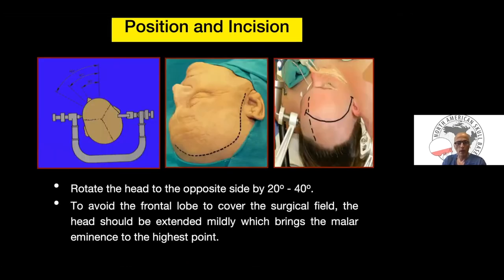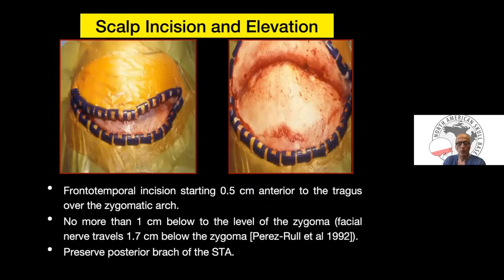For position and skin incision: I like to rotate the head to the opposite side 20 to 40 degrees, depending on the location of the lesion. To avoid the frontal lobe covering the surgical field, you need to bring the malar eminence to the highest point in your surgical field, requiring slight extension of the head. The incision is a frontotemporal incision starting half a centimeter anterior to the tragus over the zygomatic arch. We don't recommend going more than one centimeter below the level of the zygoma because facial nerve branches can travel at this level.